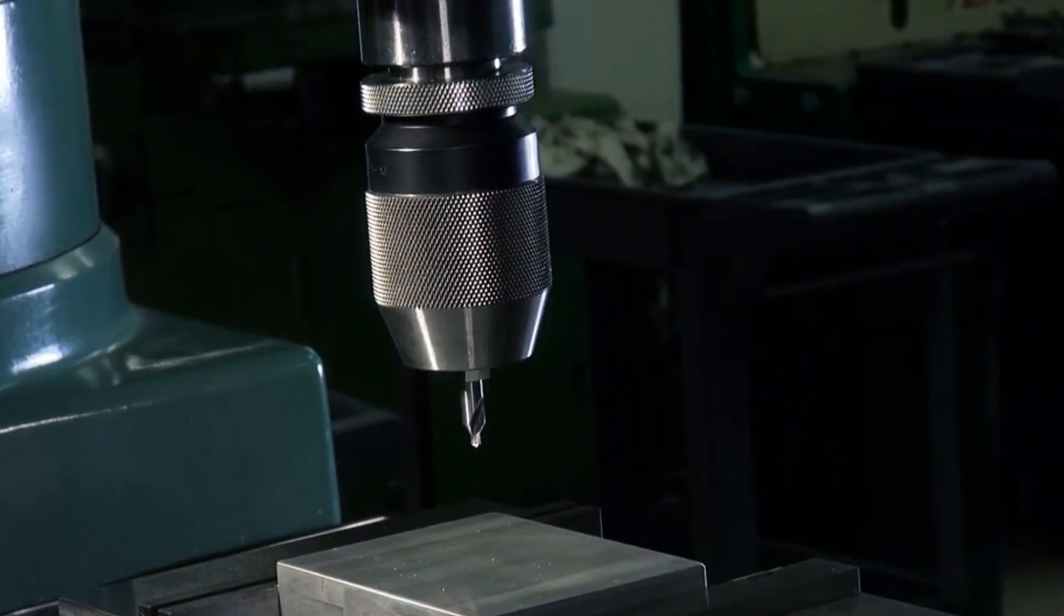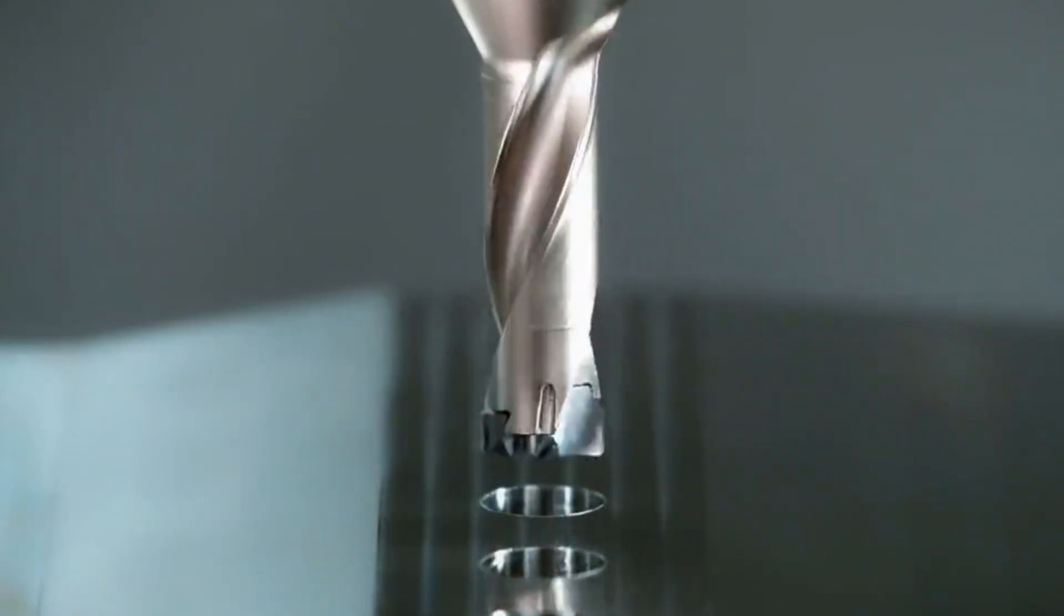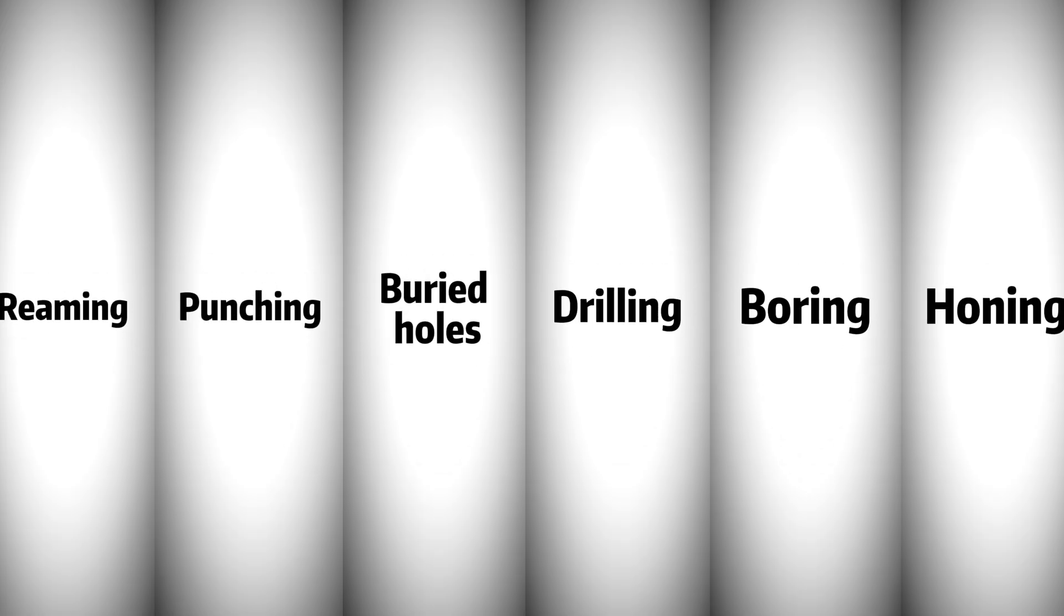Welcome back to our channel. This is Eugene Hardware. This video shares six types of hole machining operations: drilling, reaming, boring, and honing holes.